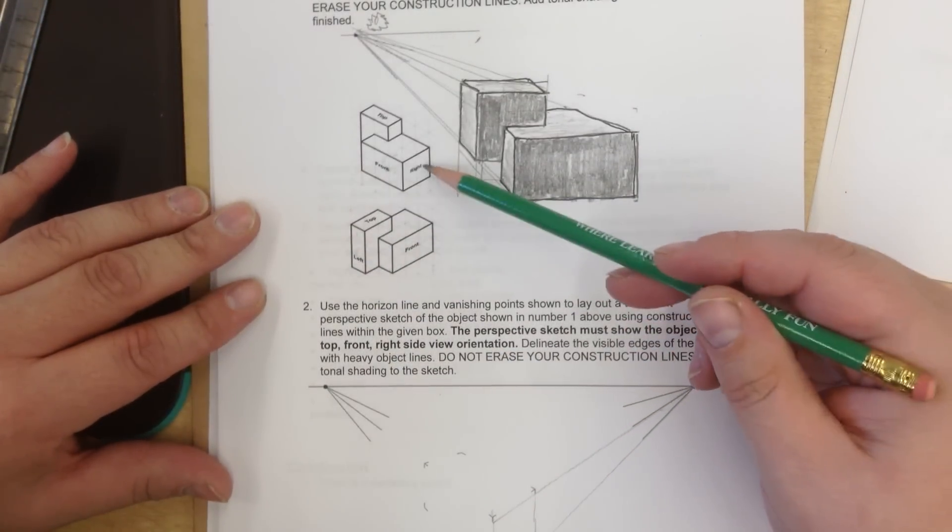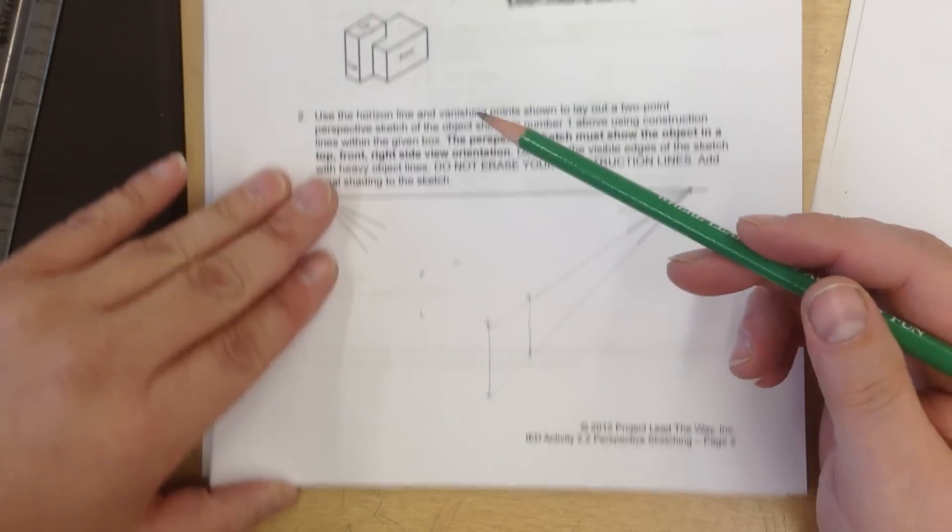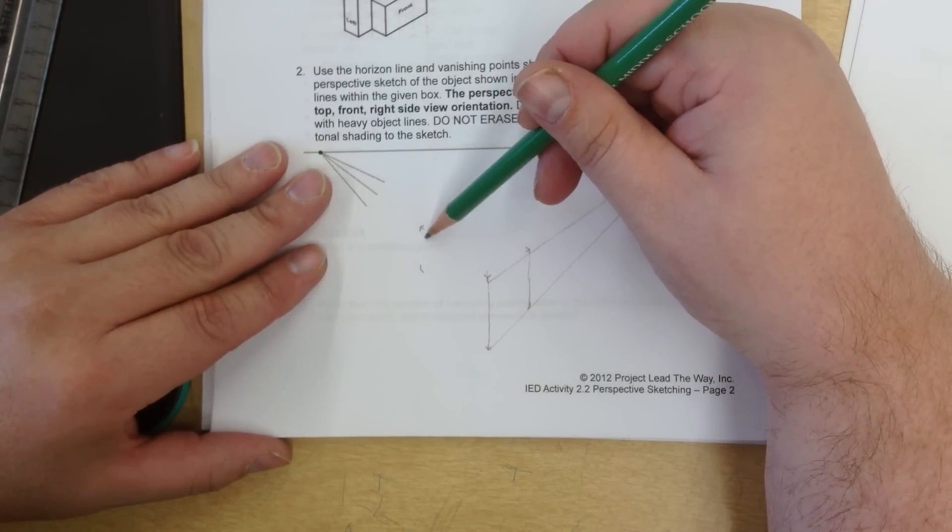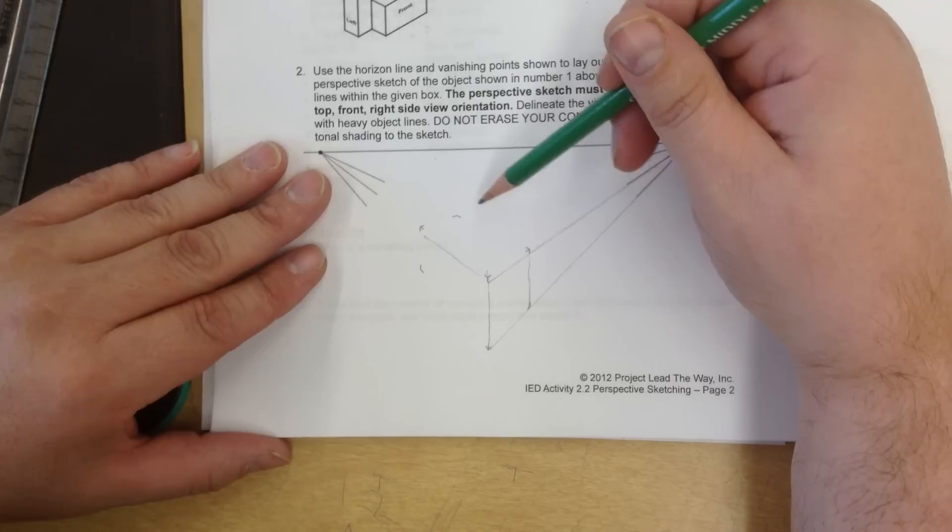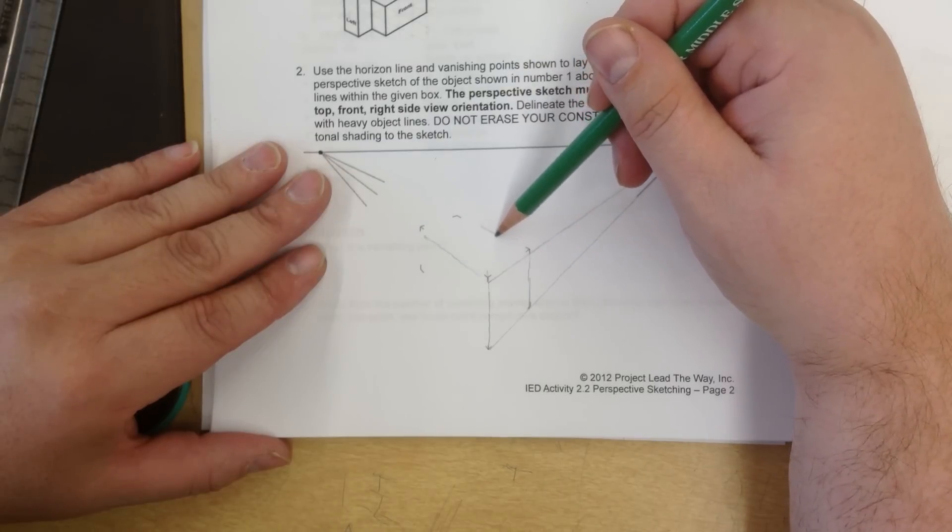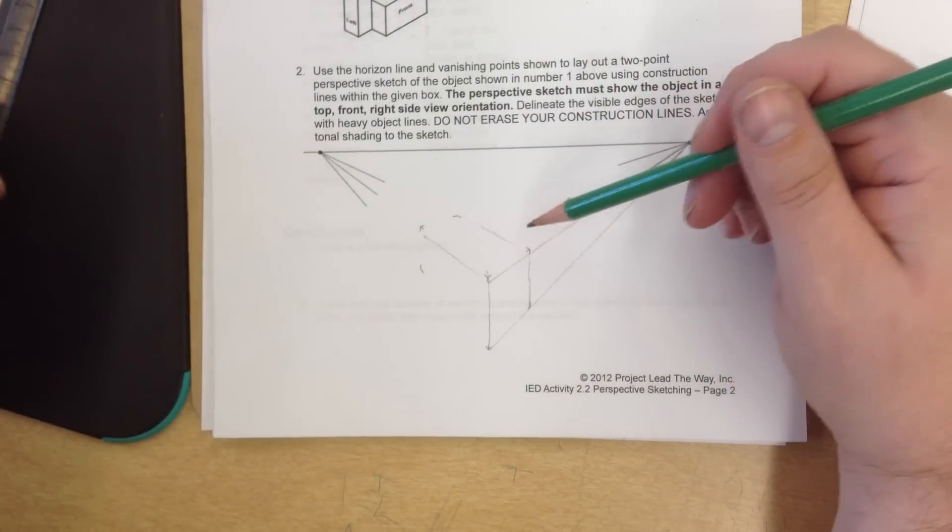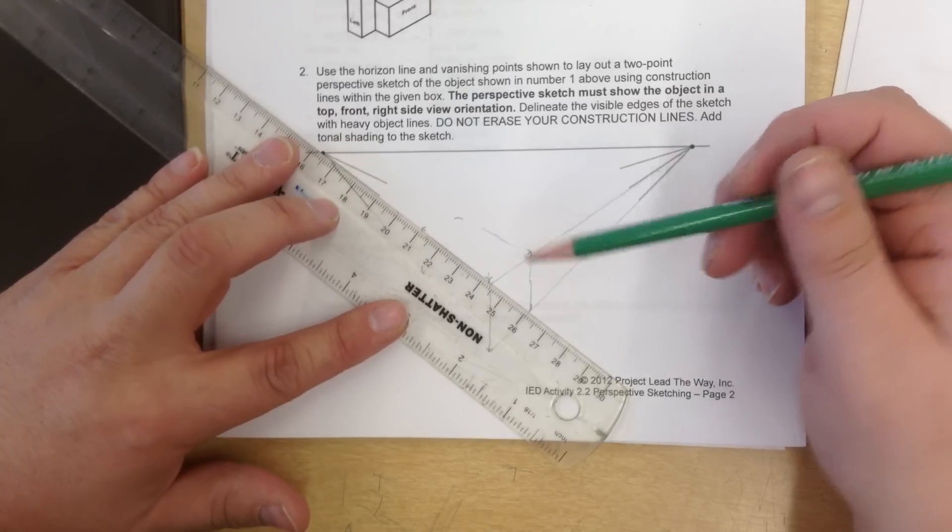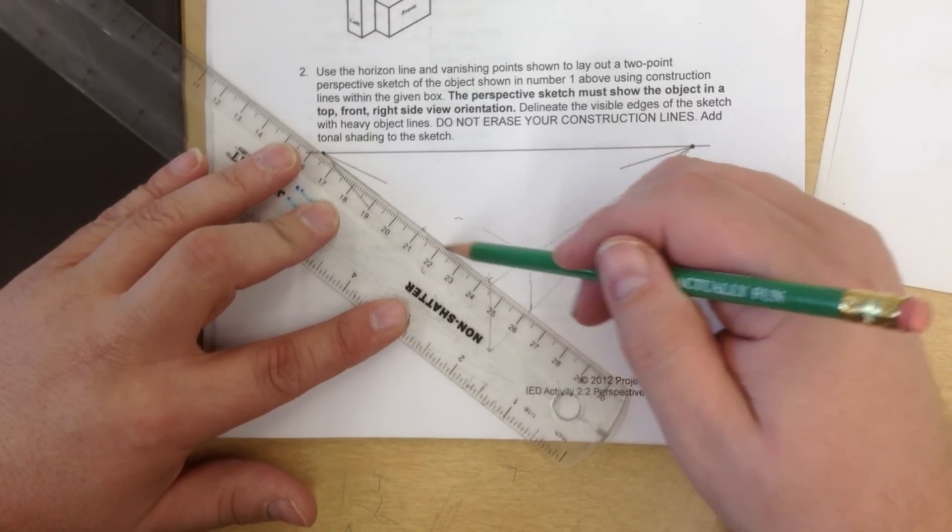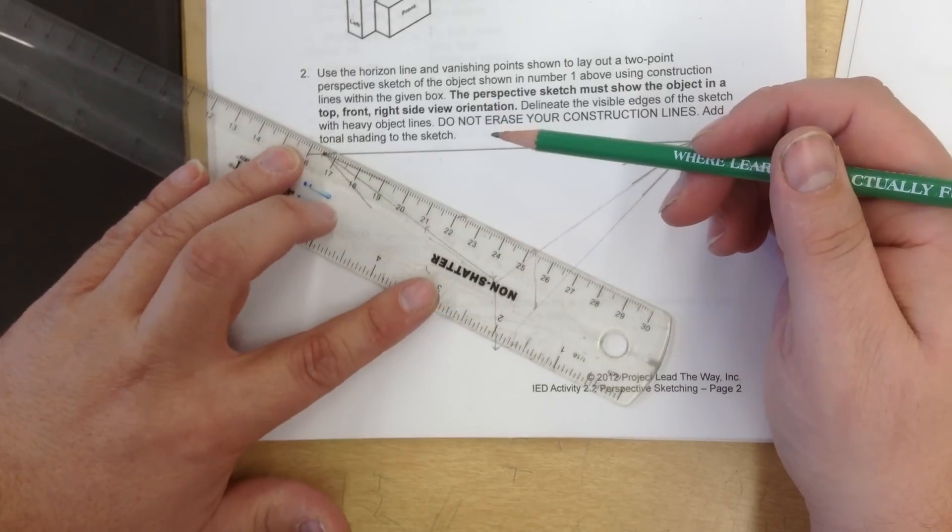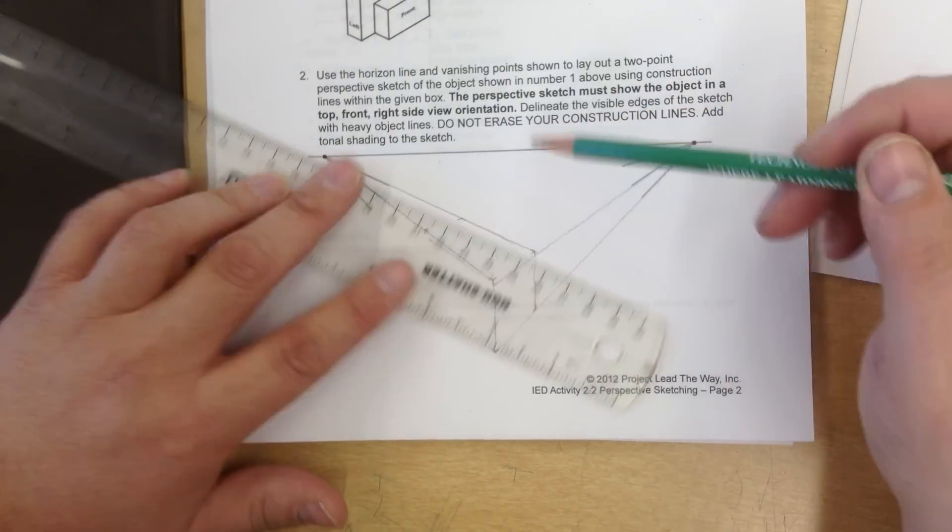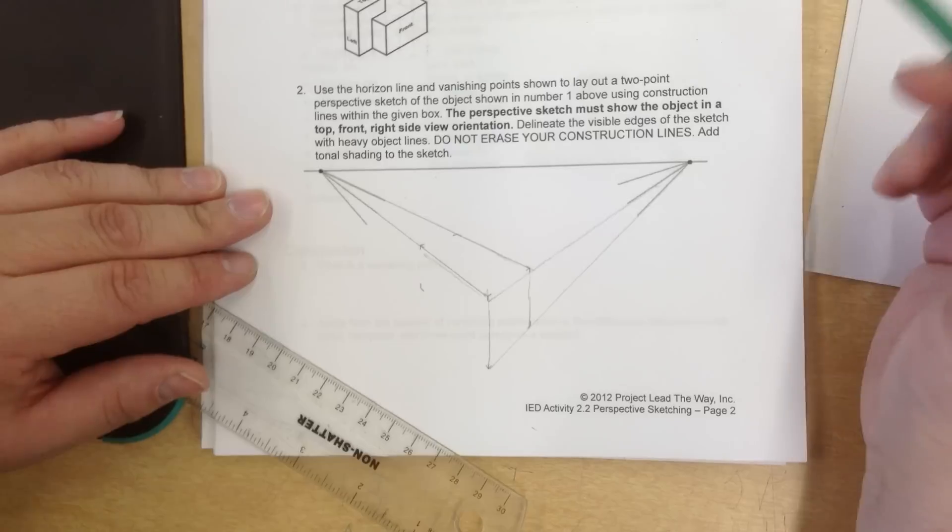And this section right here is that section right there. Okay, so from there it goes over a few units. Okay, now again, these are just suggestion lines right now. They're just construction. I'm going to connect them with my origin once I have a rough idea what's going on. And you can see I'm connecting them with my second origin line right there, or vanishing point, excuse me.